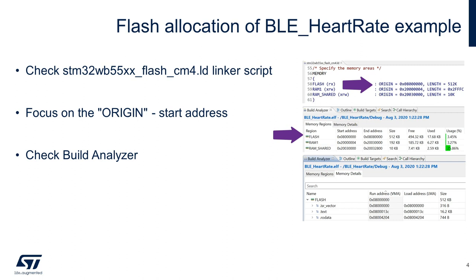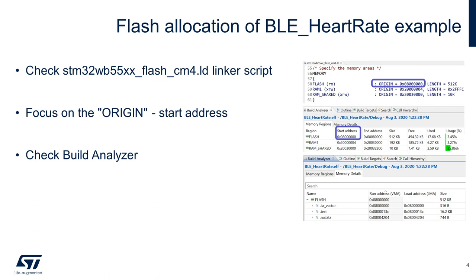For instance, the word origin specifies the start address of a memory. In this case, the linker script in the BLE heart rate example states that the start address of the flash memory is 0x08000000, which means this heart rate example is going to be programmed at that start address.